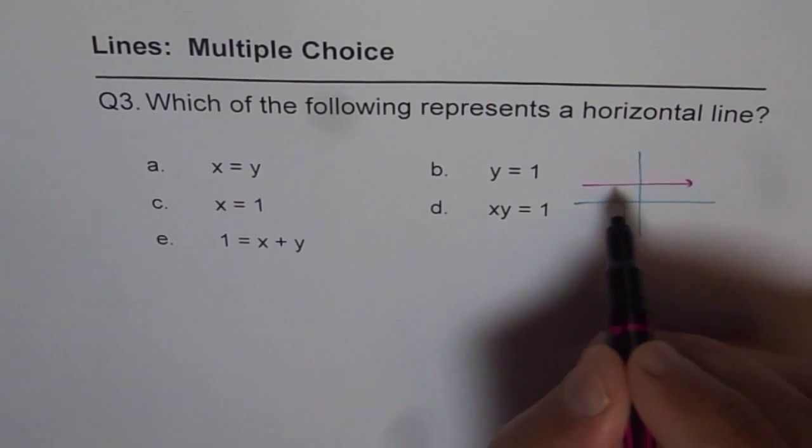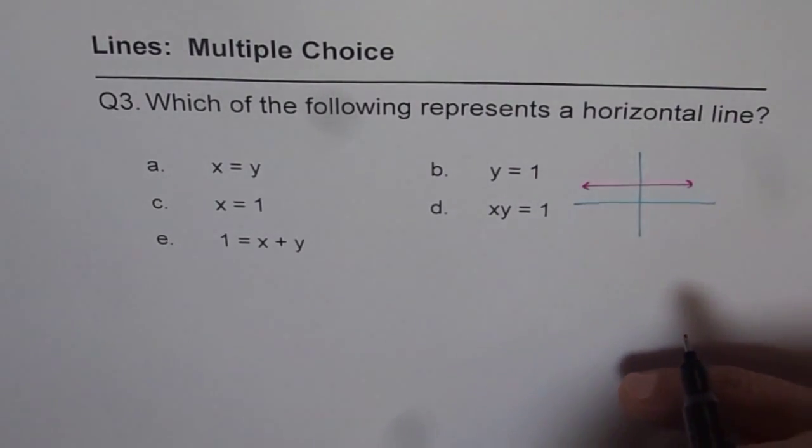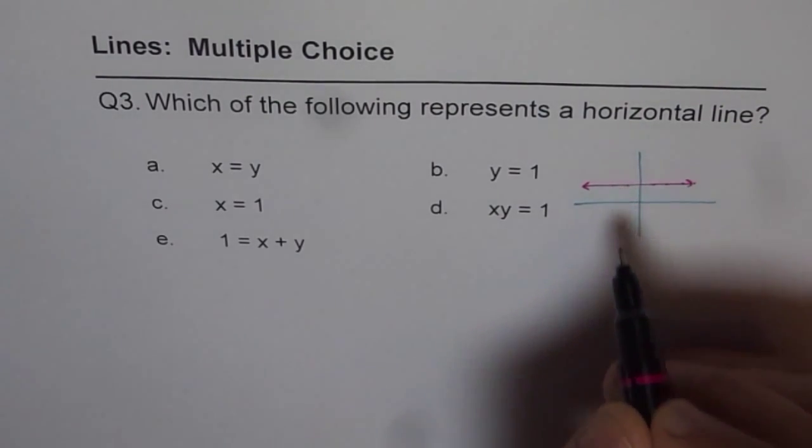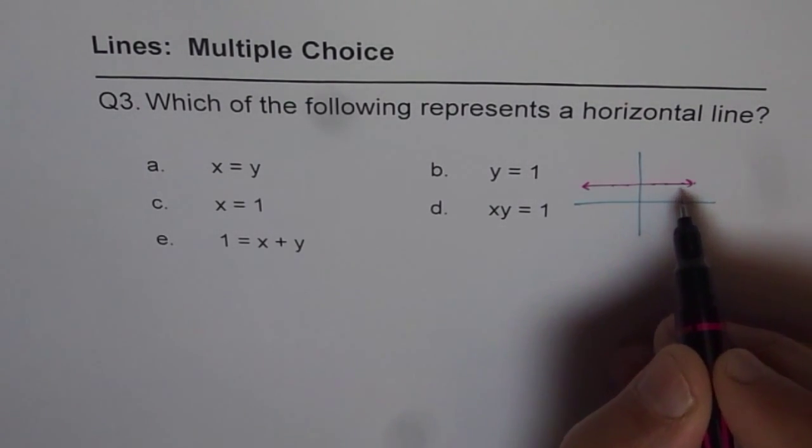Somehow like this. That is a horizontal line. What do you notice here? The y value is fixed. It does not change for a horizontal line.